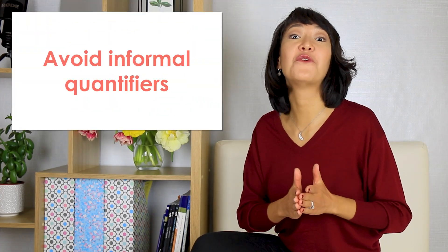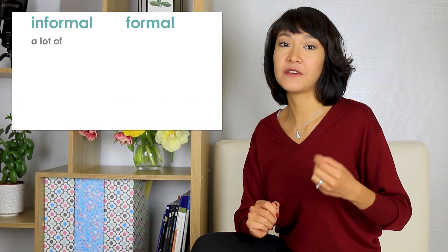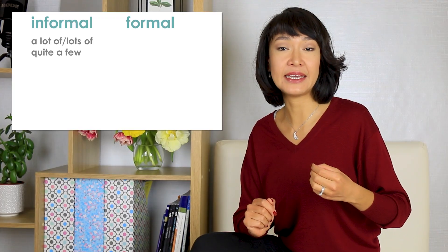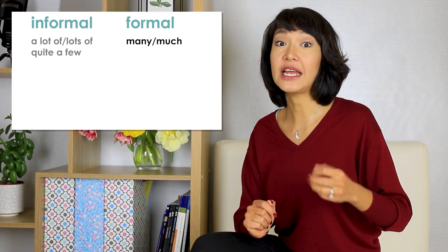Just to confirm, you can safely continue to use also, AND and BUT in the middle of sentences. Avoid informal quantifiers. Quantifiers are words that help us describe a quantity of something without giving any numbers, such as a lot of or a couple of. These quantifiers are informal — we use them when we speak. Here are some more formal alternatives for IELTS writing. Instead of a lot of, lots of, or quite a few, say many, much, or a number of.